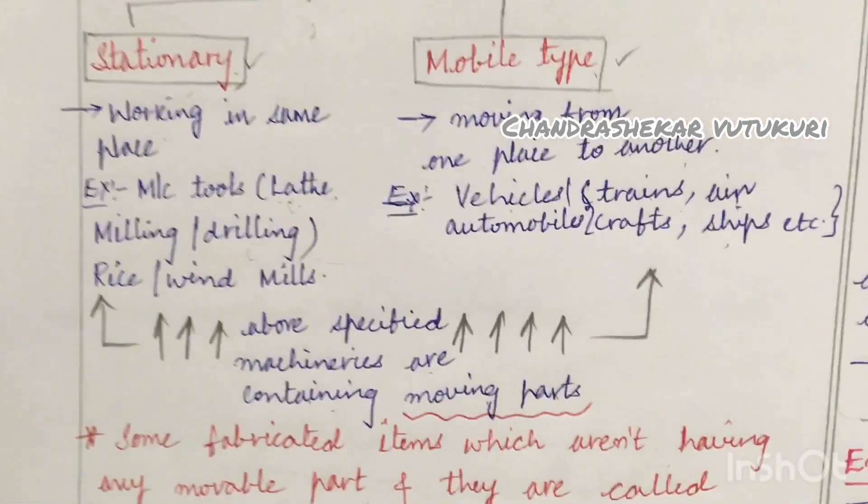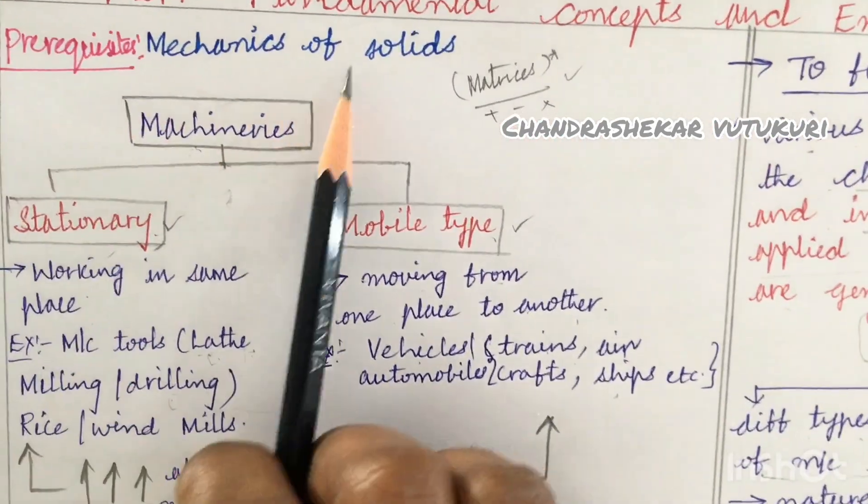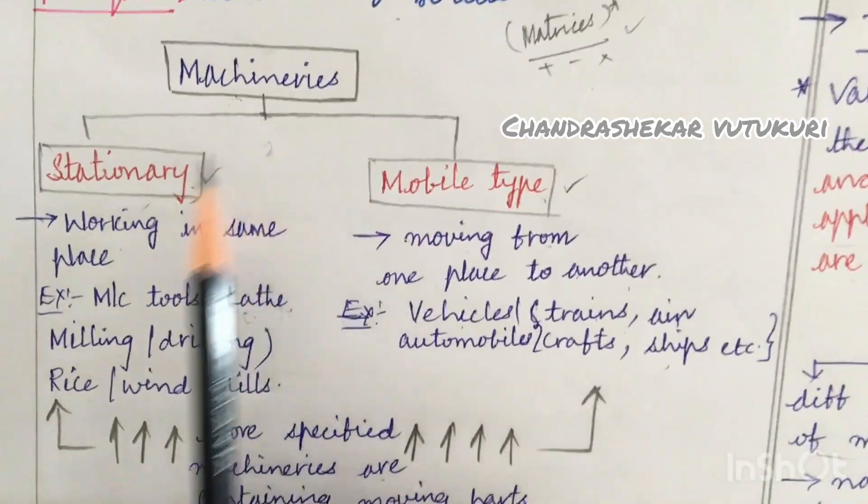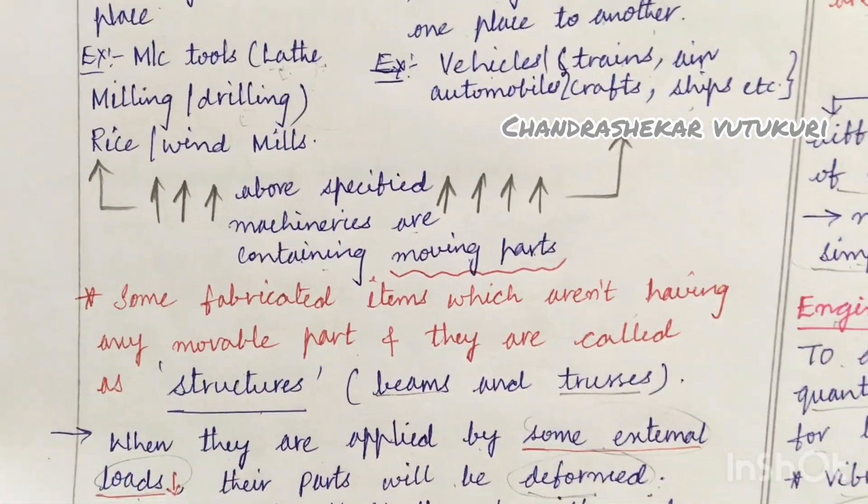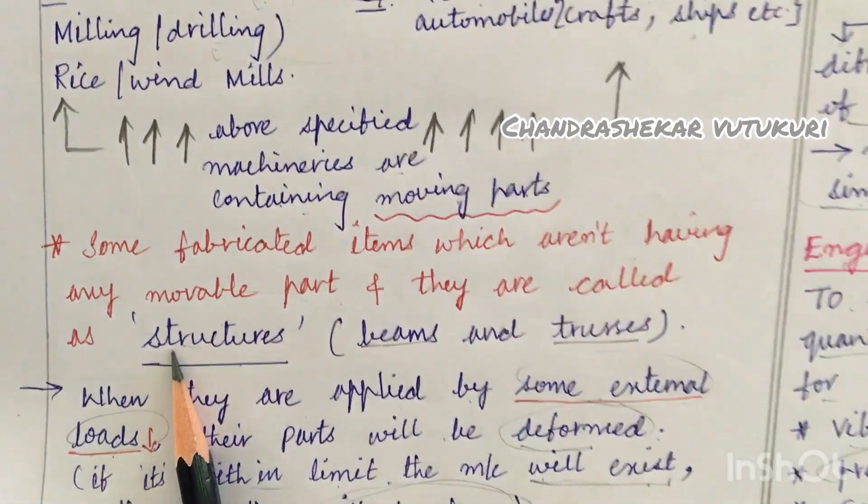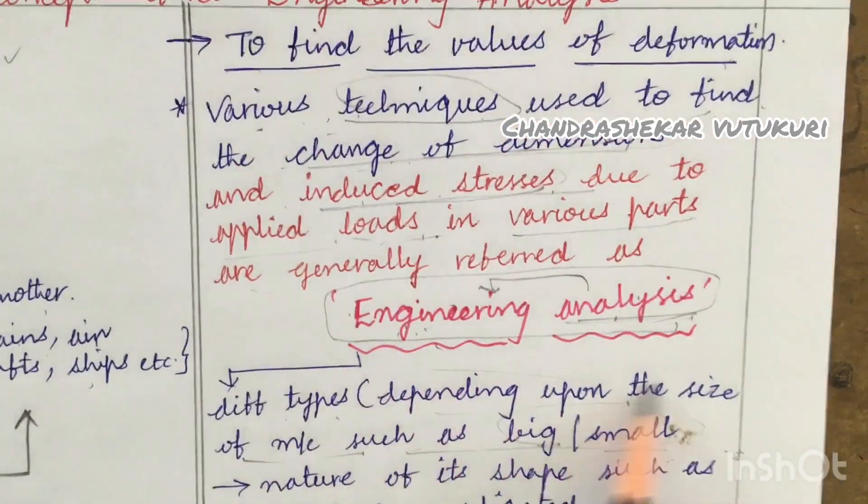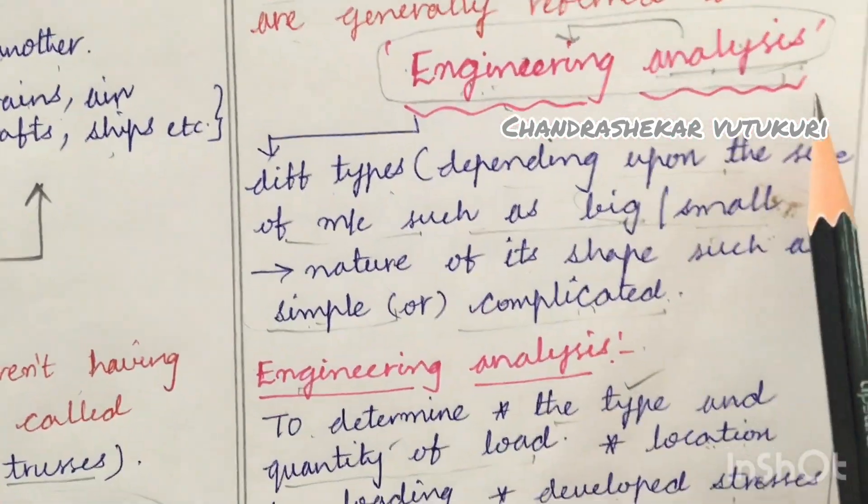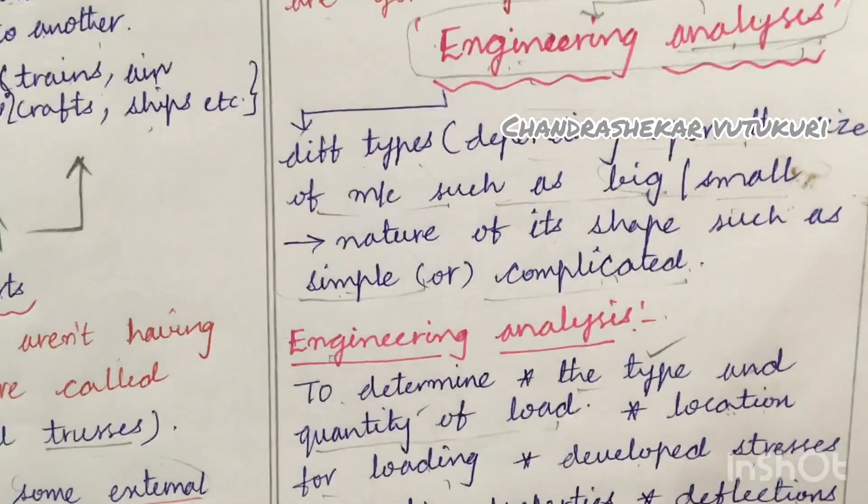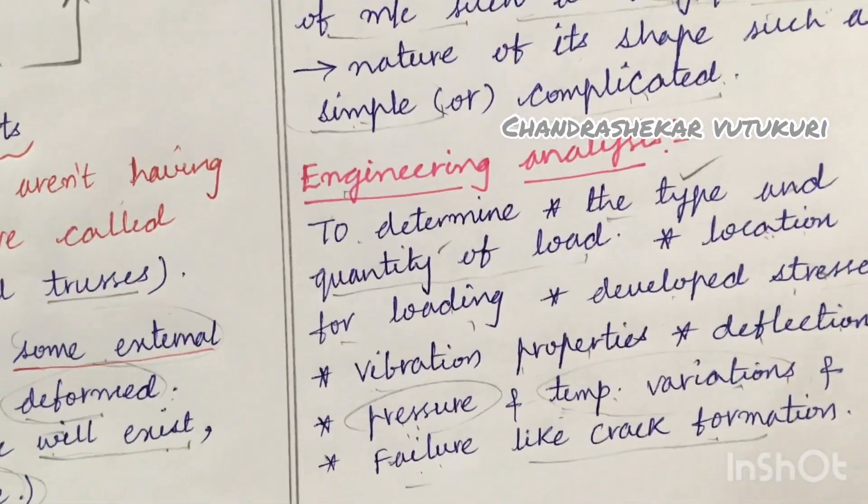I hope you are clear with this. Today I have discussed in this video about what knowledge you should have - you should have knowledge on matrices, what are the different types of machines, what are the moving parts, and what are the stationary parts called structures, and why we are going to work out the deformation and where it is going to fail. We are going to work out the engineering analysis. In the next video, what are the different types of engineering analysis, as well as I am going to define the exact definition of what is finite element method.